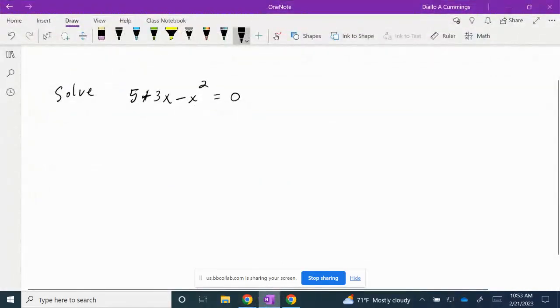Alright, so here we have 5 + 3x - x² = 0. The first thing I'm going to do is put it in descending order. Remember that I'm not actually moving any terms across the equal sign, so the signs must stay exactly the same.